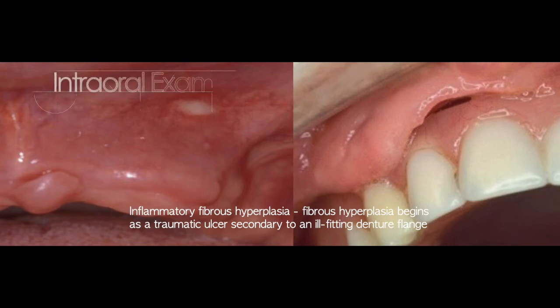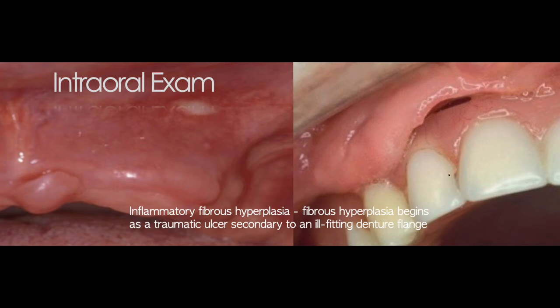There is also inflammatory fibrous hyperplasia, commonly seen in denture-wearing patients. Fibrous hyperplasia begins as a traumatic ulcer secondary to an ill-fitting denture flange, presenting as a white spot lesion. When the denture is placed over the border, the ill-fitting denture border causes this inflammatory process.